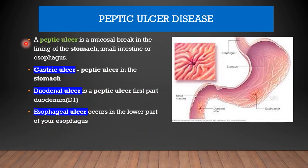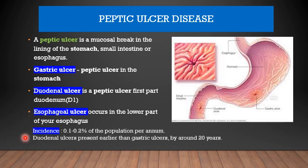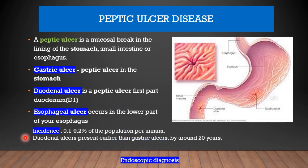Gastric Ulcer is a Peptic Ulcer in the stomach. Duodenal Ulcer is a Peptic Ulcer in the first part of the duodenum. The esophageal ulcer occurs mainly in the lower end of the esophagus. The incidence of Peptic Ulcer is about 0.1 to 0.2 of the general population per year. Duodenal ulcers present earlier than gastric ulcers by around 20 years, and this classification is based on endoscopic diagnosis.